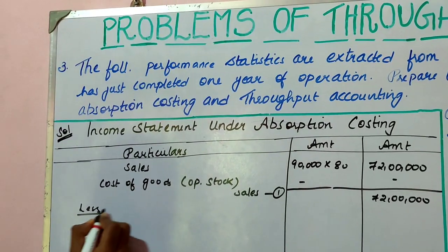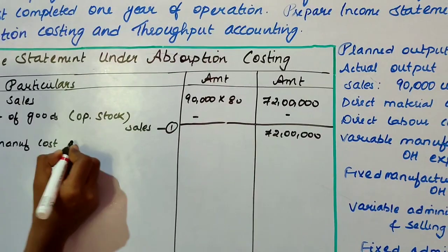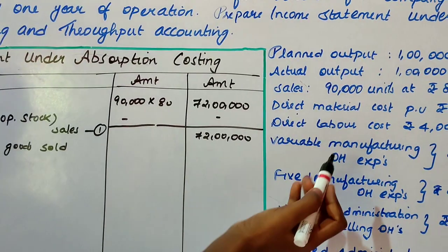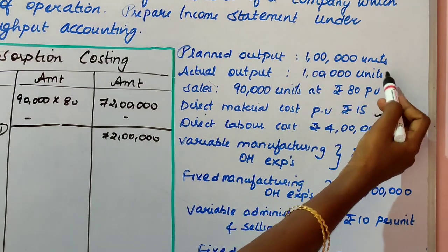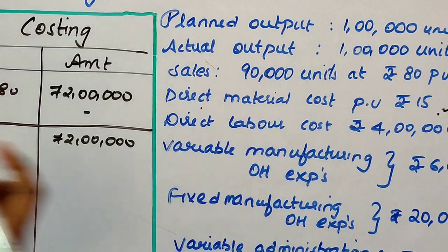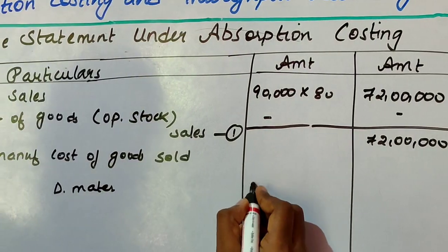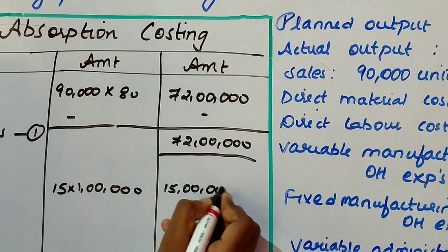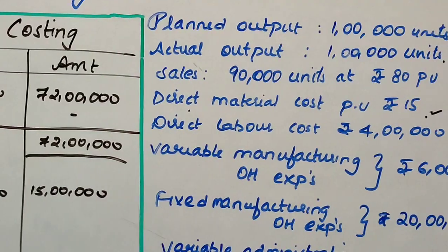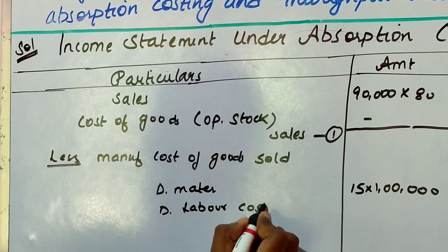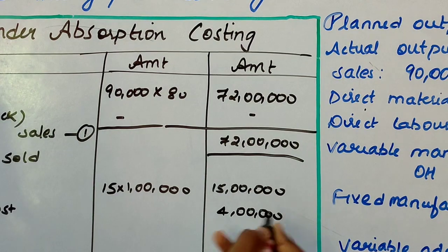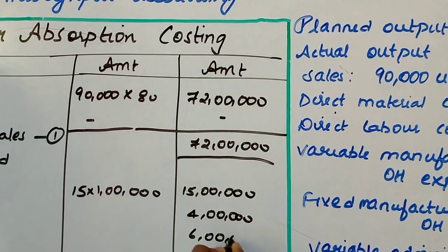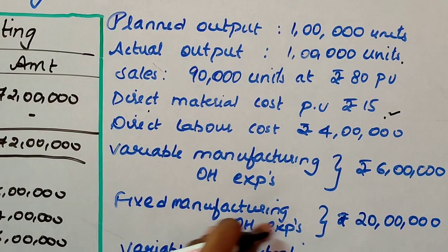From sales, you have to deduct the manufacturing cost of goods sold. The first thing is direct material. Per unit is given as 15 and output is 1 lakh, so 1 lakh into 15 gives 15 lakhs. Next is direct labour cost given as 4 lakhs, variable overhead given as 6 lakhs, and fixed manufacturing overhead as 20 lakhs.